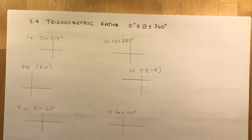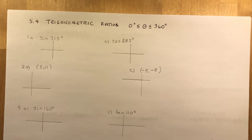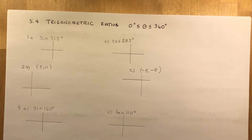In section 5.4 we look at trigonometric ratios between 0 and 360 degrees. My plan today is to do some homework examples because all of this material was covered in my 5.3 lesson, and I will explain it further as we go through the examples.